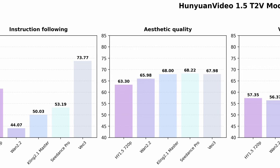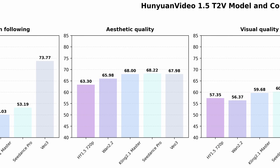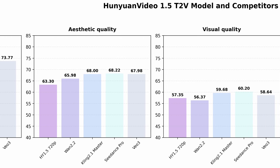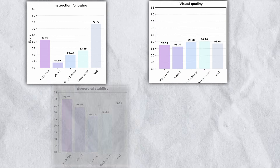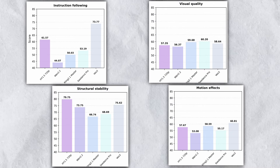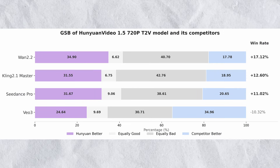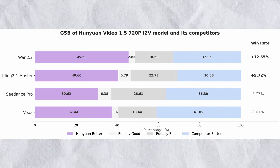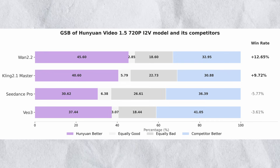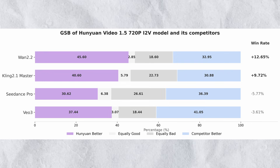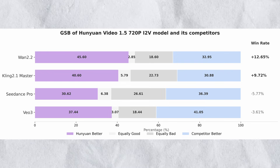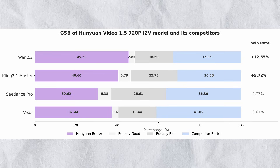Tencent claims Hanyuan Video 1.5 surpasses version 1.2.2, currently considered the leading open source video generator. Their benchmarks show Hanyuan ahead in instruction following, visual quality, structural stability, and motion effects. The win rate comparison reveals Hanyuan achieves a 17.112% higher win rate than 1.2.2 for text-to-video generation. For image-to-video, Hanyuan also shows higher win rates, though the margin is smaller. If these benchmarks hold true in real-world usage, Hanyuan Video 1.5 becomes the top open source video model currently available.